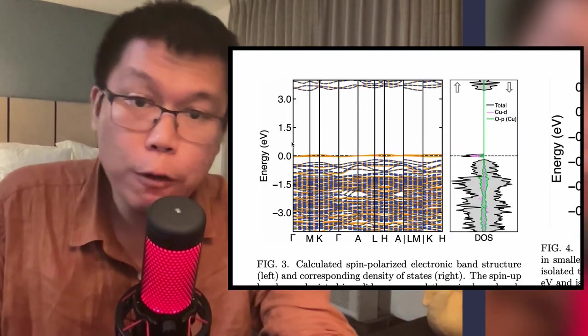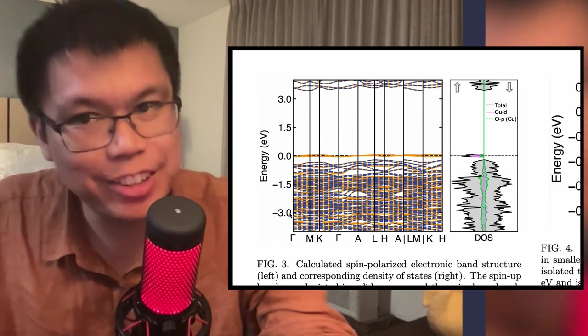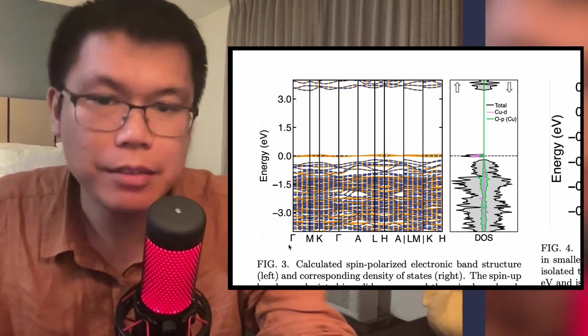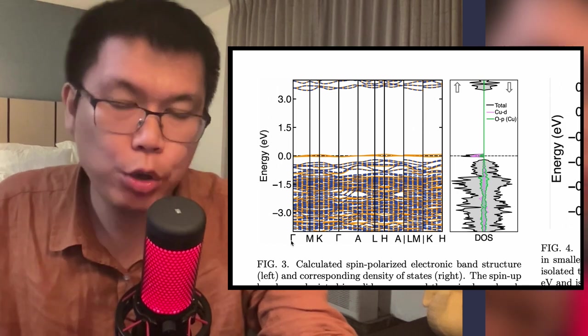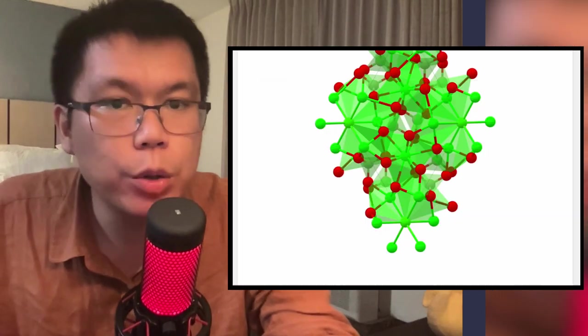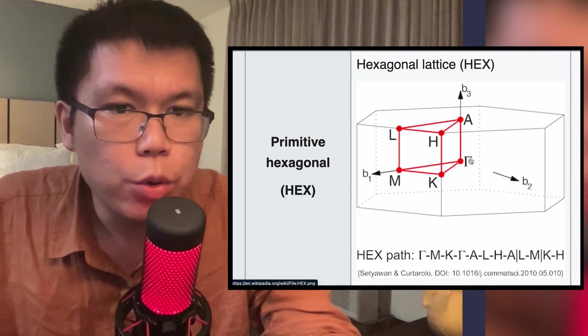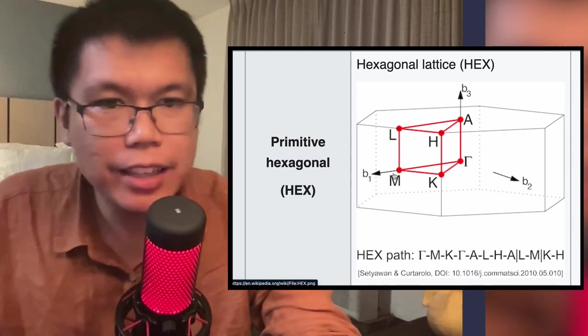Basically, we're following the possible energies of electrons as we move through that predefined path from gamma, which is at the center, to M, which was at the edge of the face of the hexagon, to K, which is at the corner.